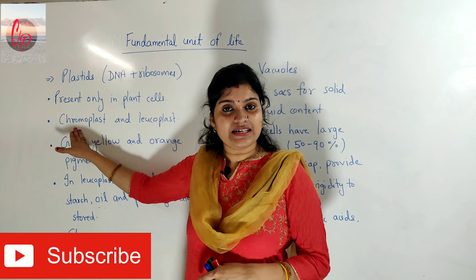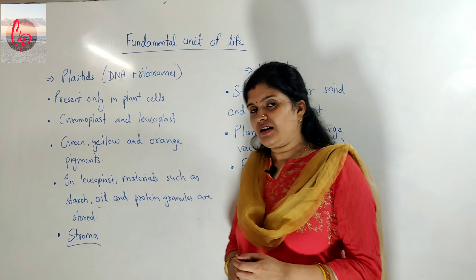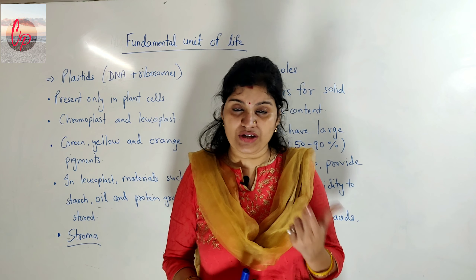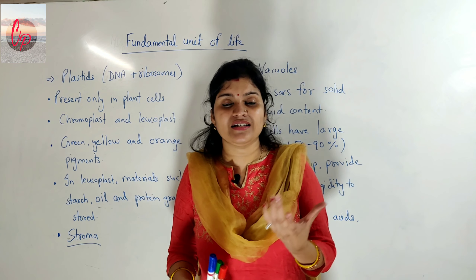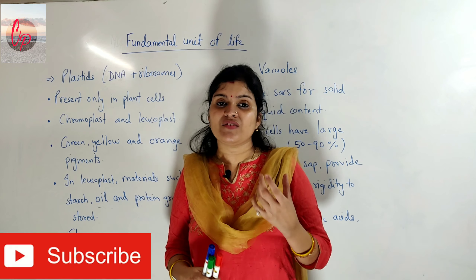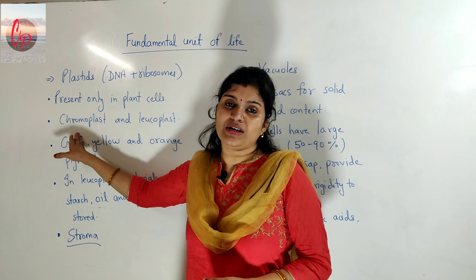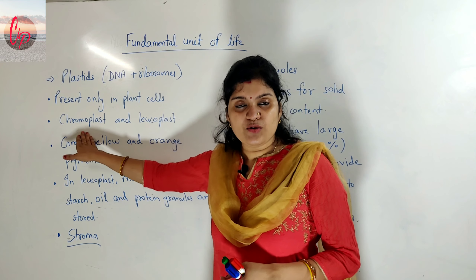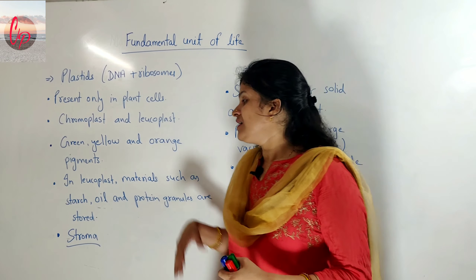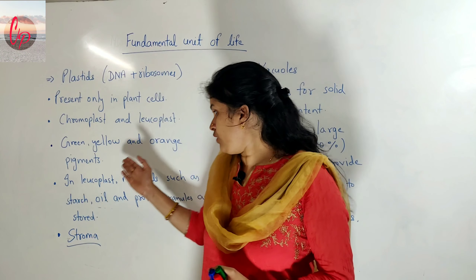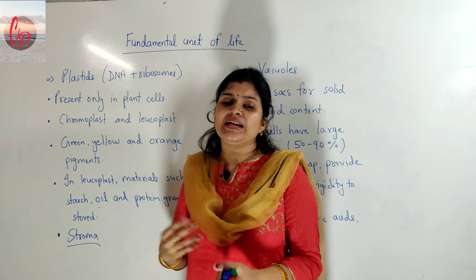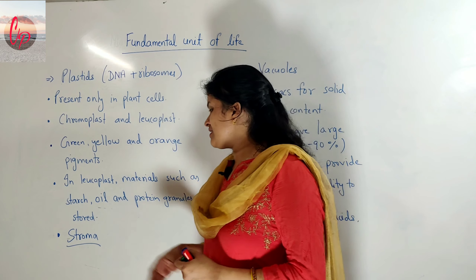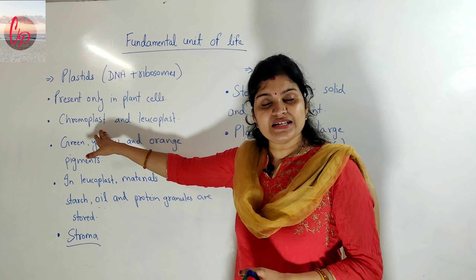A very frequently used example of chromoplast is chlorophyll, which you can observe in the green parts of plants. The green parts are green in color because they contain the pigment chlorophyll, which comes under chromoplast since it shows color. Some other pigments are also present which give plants yellow and orange colors, while green color is due to chloroplast.